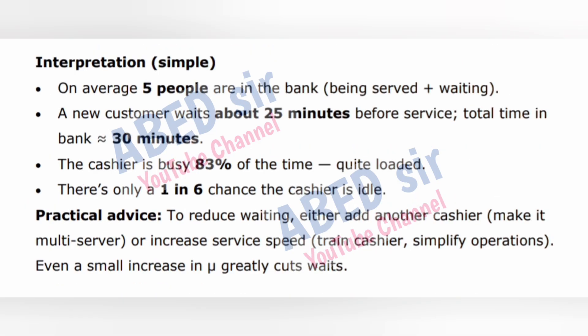Interpretation: On average, 5 people are in the bank (being served plus waiting). A new customer waits about 25 minutes before service; total time in bank is 30 minutes. The cashier is busy 83% of the time — quite loaded. There is only a 1 in 6 chance the cashier is idle. Practical advice to reduce waiting: either add another cashier (make it multi-server) or increase service speed by training the cashier and simplifying operations. Even a small increase in μ greatly cuts wait times.